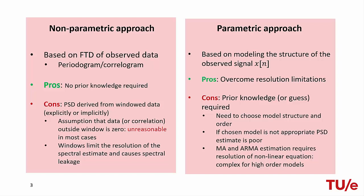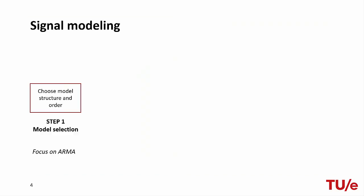In this course, we will focus on modeling the observed data as an ARMA process. While the parameters of autoregressive models can be estimated from an estimate of the autocorrelation by linear regression, moving average and full ARMA models require the resolution of non-linear equations, making the estimation quite challenging. In general, the procedure we need to follow is as follows.